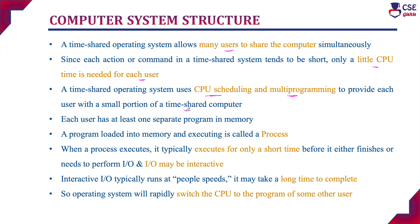Whenever the user wants to execute any program, at least one program should be stored in memory. Whenever the CPU is free, the program must be loaded from disk into memory and its execution starts. Once the program is assigned to the CPU for execution, we call the program a process. When the process executes, it typically runs for a short time. If it requires any IO operation before finishing execution, the IO operation is also interactive and can take longer. The operating system rapidly switches the CPU to another program when the executing program needs to perform an IO operation.